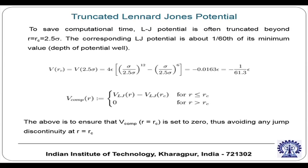To save computational time, the Lennard-Jones potential is often truncated beyond a cutoff radius r_c = 2.5σ, where the corresponding LJ potential is about 1/60th of its minimum value. The implementation sets the potential using the LJ formula for r < r_c and zero for r ≥ r_c.